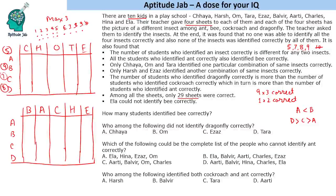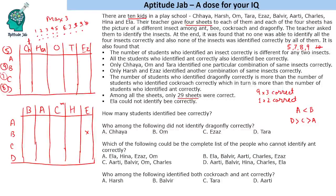One thing given is that Ila could not identify bee correctly. Ila is the last student. Since 9 people get bee correct and Ila did not, that means all other 9 students identified bee correctly. The students include Chaya, Harsh, Ezaz, Charles, and Ila among others.